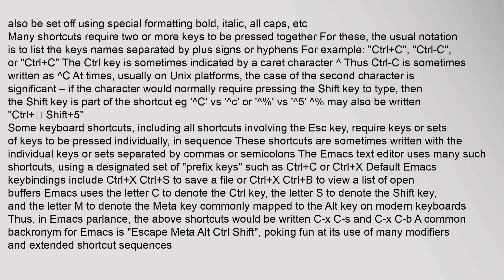Many shortcuts require two or more keys to be pressed together. For these, the usual notation is to list the key names separated by plus signs or hyphens — for example, Ctrl+C. The Ctrl key is sometimes indicated by a caret character, so Ctrl+C is sometimes written as ^C, usually on Unix platforms. The case of the second character is significant: if the character would normally require pressing the Shift key to type, then Shift is part of the shortcut, e.g. ^C versus ^c, or ^% versus ^5.